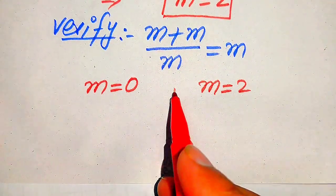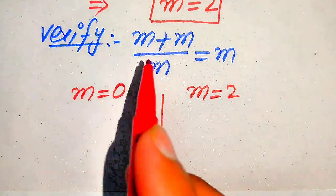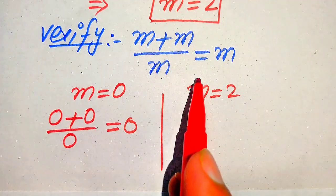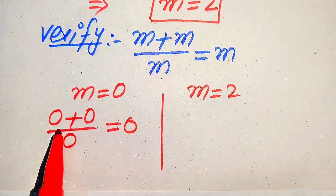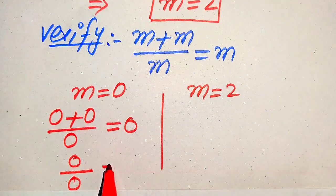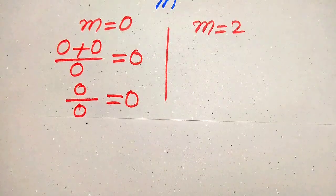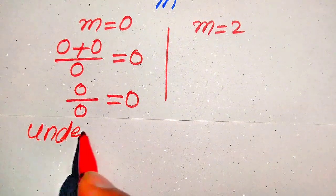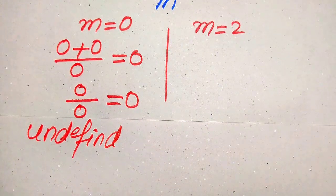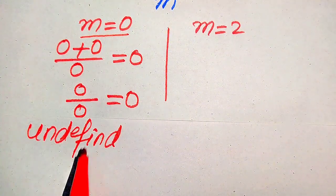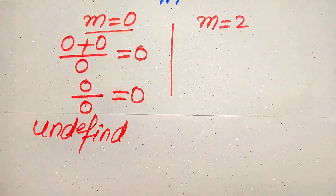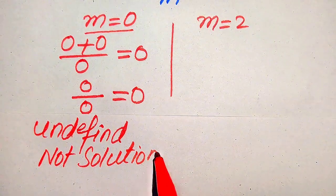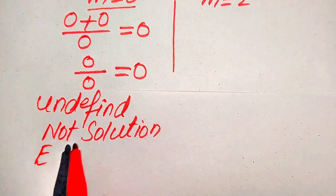When we put m equals 0, it becomes 0 plus 0 divided by 0 equals 0. Here 0 over 0 is the indeterminate form — it is undefined. So m equals 0 does not satisfy the given equation; therefore m equals 0 is an extraneous root and is not a solution of the given equation.